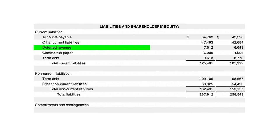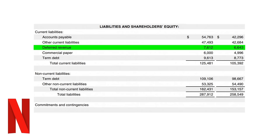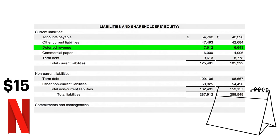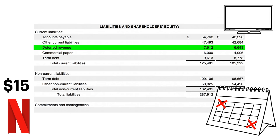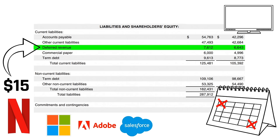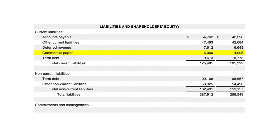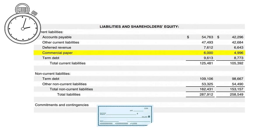The next line item is deferred revenue, which is important for software and tech companies. When you sign up for Netflix, the company bills you $15 upfront at the beginning of the month. However, because of accounting rules, the company cannot classify that $15 as revenue until they provide the service to you. So that $15 shows up in deferred revenue until after the company has provided you with the promised service. This is very common in subscription-based software businesses like Netflix, Microsoft, Adobe, and Salesforce. For Apple, this would come from services like Apple Music and iCloud Storage. Next up is commercial paper — very short-term debt, around 30 days — which companies use to fund daily operations like payroll and paying suppliers.